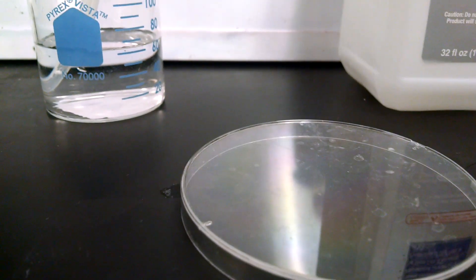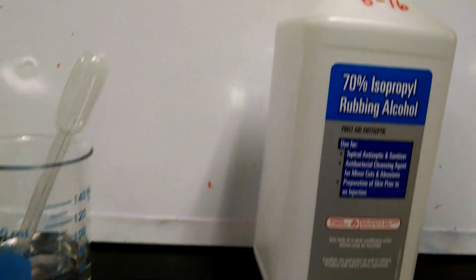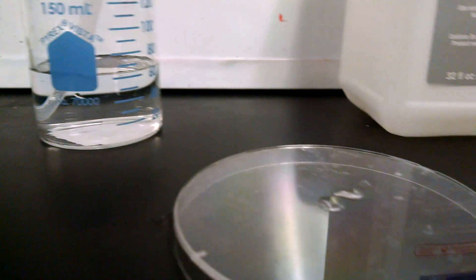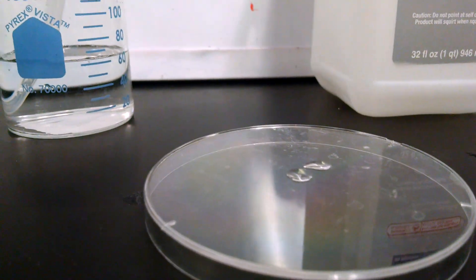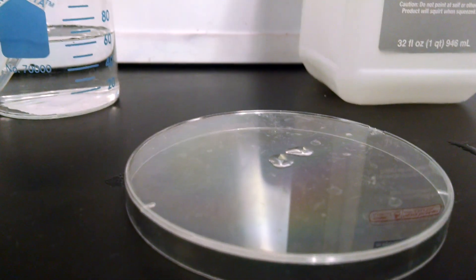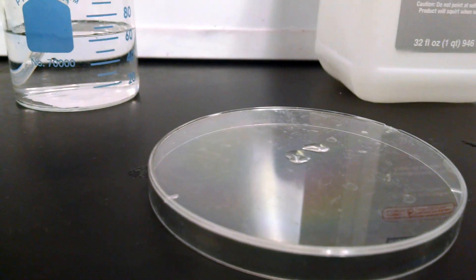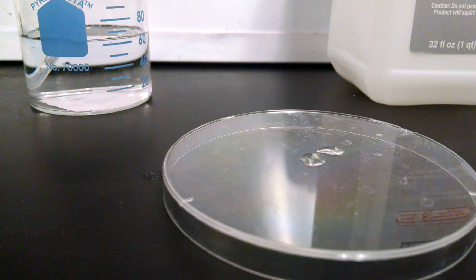In this experiment, I'm going to take some rubbing alcohol and place two drops on a Petri dish. Then I'm going to take a fan and blow on this, and we're going to count how long it takes for these two drops to evaporate.